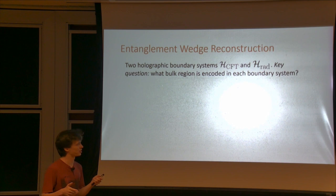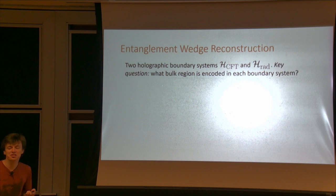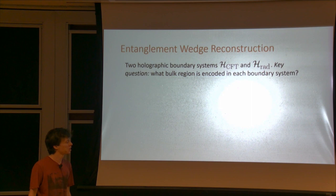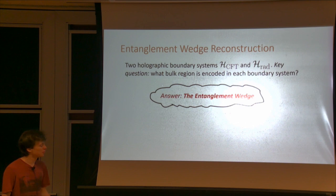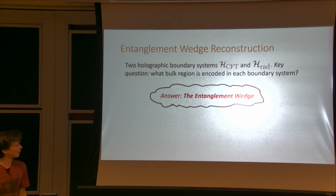So we now have two holographic boundary systems: the CFT and HRAD. There's an obvious question, which is what part of the bulk gets encoded in each of those two boundary systems? And that's a question that we now have the tools to answer — we didn't have the tools to answer that question five years ago, but we do now. The answer is that each boundary system encodes its entanglement wedge.